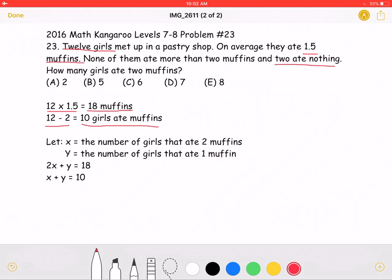Now, the problem is asking us for how many girls ate two muffins. Well, we know that none of the girls ate more than two muffins. And on average, they ate 1.5. So out of the girls that ate muffins, some of them ate two muffins, which would be x. And some of them ate one muffin, which we can let be represented by y.